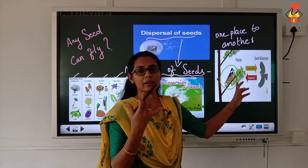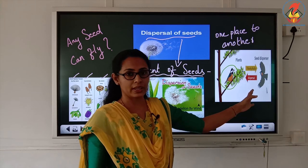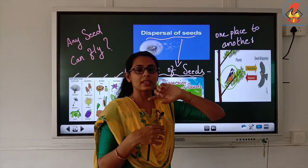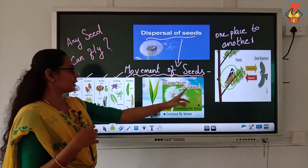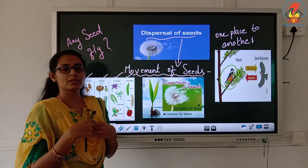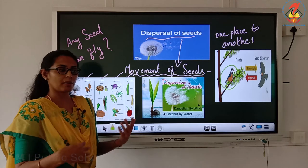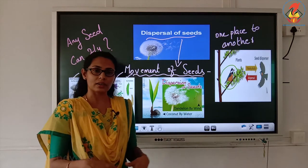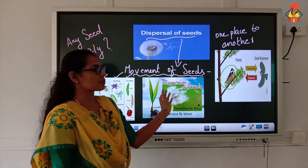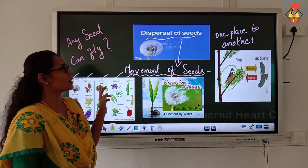Animals and birds eat fruits, and inside the fruit there are seeds. When they move from one place to another and disperse, the seeds go along too. Sometimes seeds also burst because of pressure and move from one place to another. Humans also carry seeds — sometimes when we go outside, seeds get stuck on our dress or our bags. So all these are reasons for the movement of the seed.